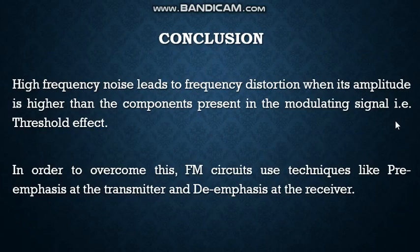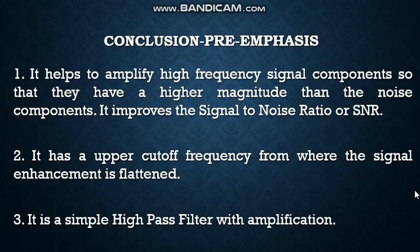The conclusion: high-frequency noise leads to frequency distortion, i.e., threshold, when its amplitude is higher than the component present in the modulating signal. In order to overcome this, FM circuits use techniques like pre-emphasis at the transmitter and de-emphasis at the receiver. Pre-emphasis circuits help to amplify high-frequency signal components so that they have a higher magnitude than the noise component. It improves the signal-to-noise ratio. It has an upper cutoff frequency from where the signal enhancement is flattened. It is a simple high-pass filter with amplification.